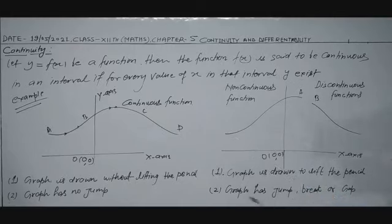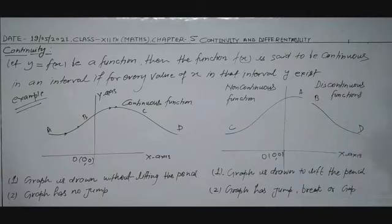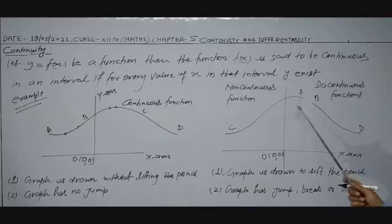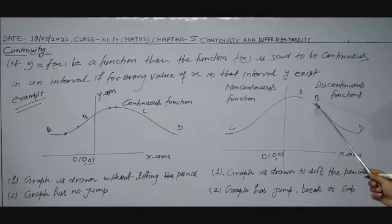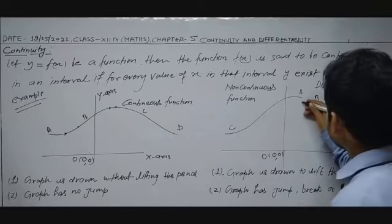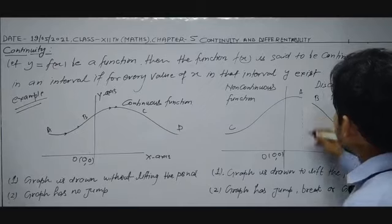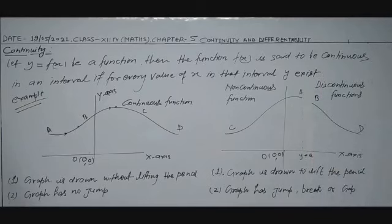Suppose this graph is M, A, B, C, D — or C, A, B, D. The graph is discontinuous at A. It is continuous from C to A, and then there is a break at A. The graph is again continuous from B to D. So the whole graph is discontinuous at point A. Suppose y = A — this function is discontinuous.